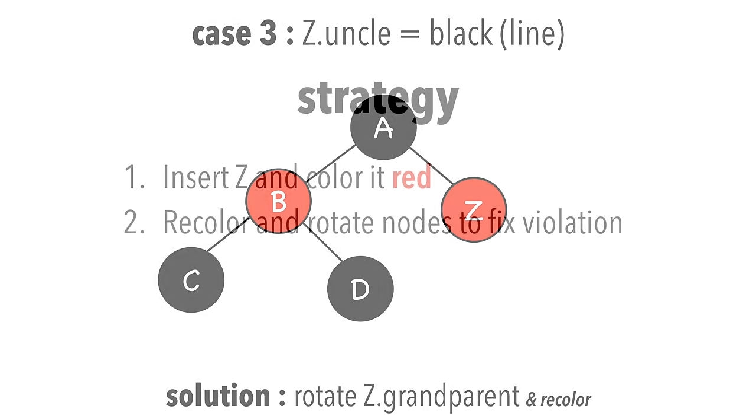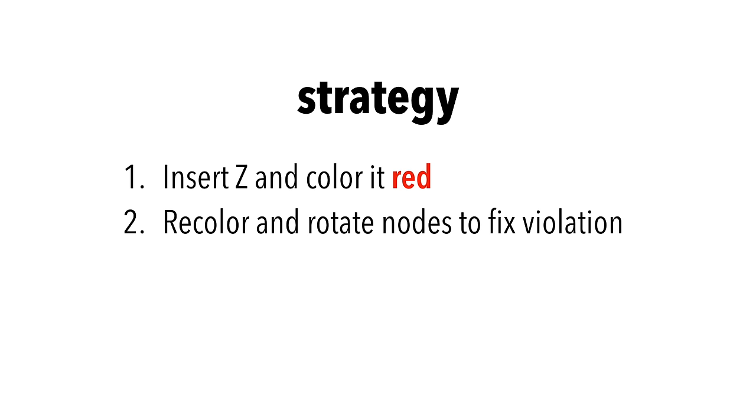That's it. Let's review quickly. To start, we insert the node and color it red. Red-black trees have certain standards, so we must recolor and rotate nodes to fix violations. There are 4 possible fixes we'll encounter.